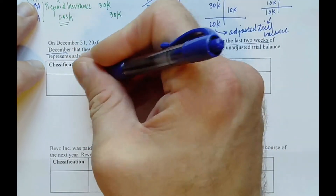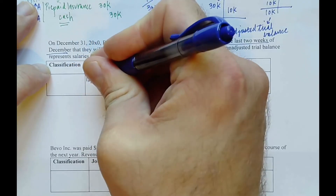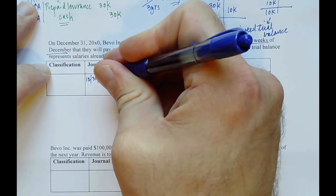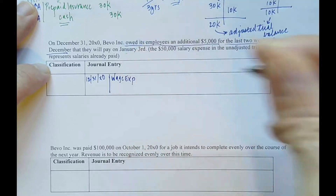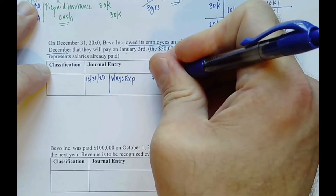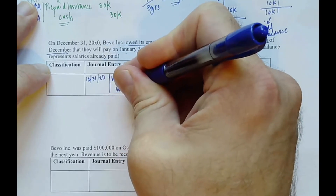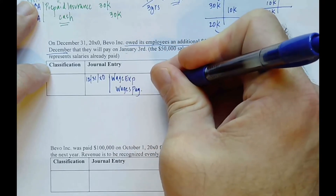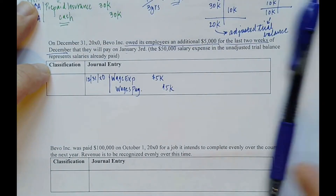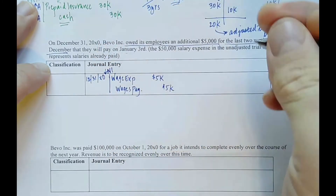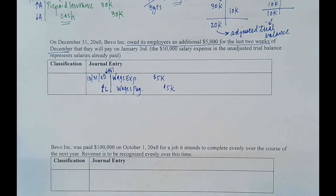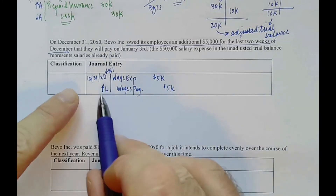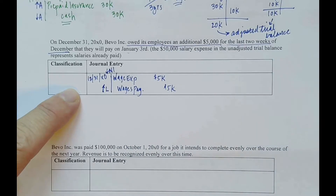No calculations are needed here — we just note the timing. The adjusting entry on December 31, X0 is: debit wage expense for $5,000 and credit wages payable for $5,000. This creates a wage expense that reduces net income and increases wages payable as a liability. Since we're recognizing the expense before the cash is paid — the cash goes out January 3rd of the next year — this is classified as an accrual.